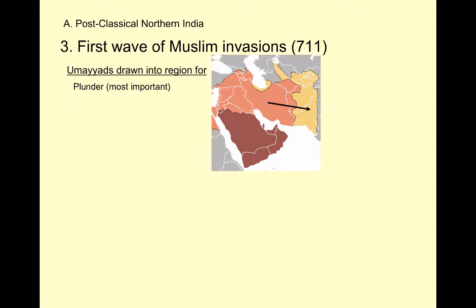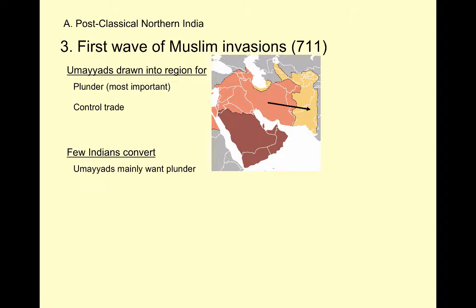Fast forwarding to the 8th century: in 711, the Umayyads — who we talked about in our first set of notes — come in and conquer parts of northwestern India. They're there primarily for plunder, not so much to spread their faith. The Umayyad empire also knows that promoting trade and taxing it builds wealth. So India is brought into the Muslim world through conquest, but also tied into their trade networks. Under Umayyad rule, very few Indians convert, as conversion isn't the Umayyads' primary goal, and they don't force people to convert.